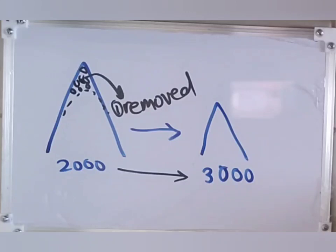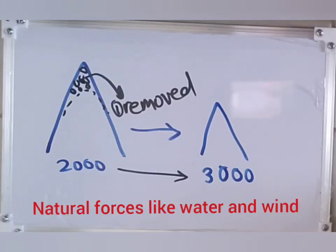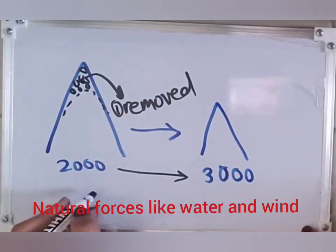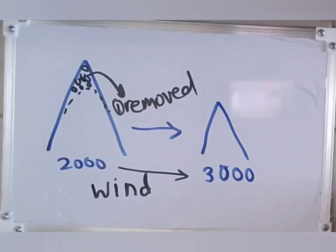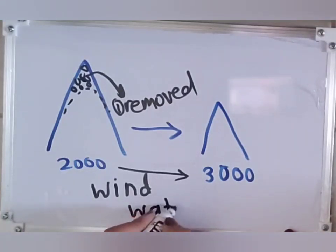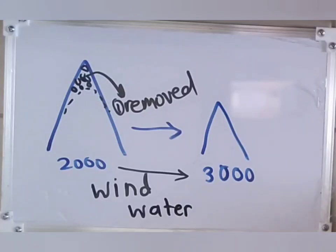Erosion happens due to natural forces — I can't say that breaking down a mountain with a tractor is erosion because a tractor is not a natural force. The natural forces that cause erosion are wind — breaking down tiny bits of rocks over a very long period of time — or water, which can come as a waterfall or rainwater that removes very tiny bits of rocks over a very long period of time.